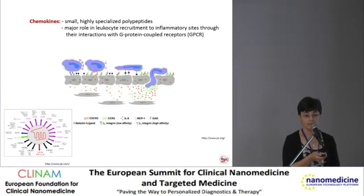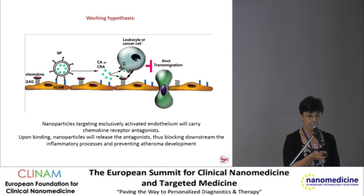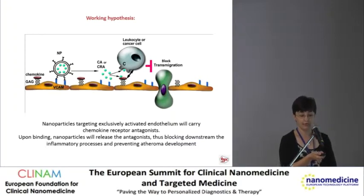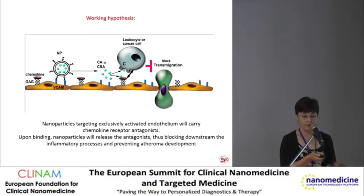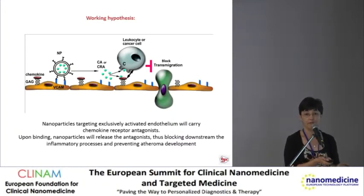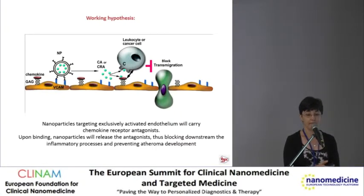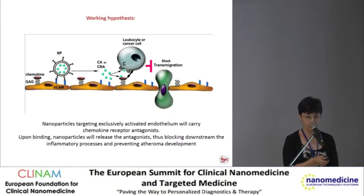Since chemokines are critically involved in atherosclerosis development, we thought that interference in the interaction between chemokines and chemokine receptors would determine the inhibition of transmigration of monocytes into the arterial wall. Our working hypothesis was that nanoparticles targeting exclusively activated endothelium would carry chemokine receptor antagonists, and upon binding, would release the antagonists, blocking downstream the inflammatory process and preventing atheroma development. We chose this approach because systemic intervention in the chemokine system revealed detrimental immunological effects, so we aimed to develop targeted delivery of chemokine inhibitors at the endothelial surface.